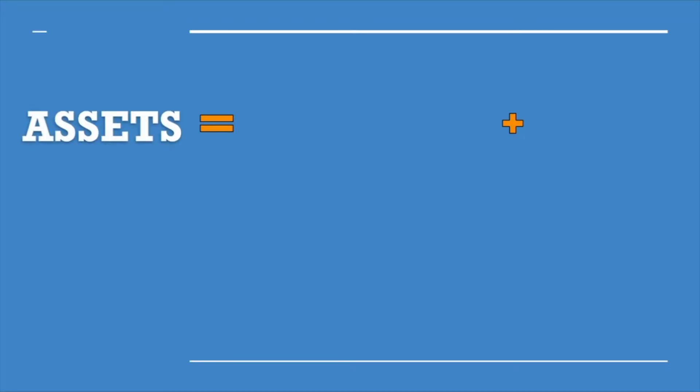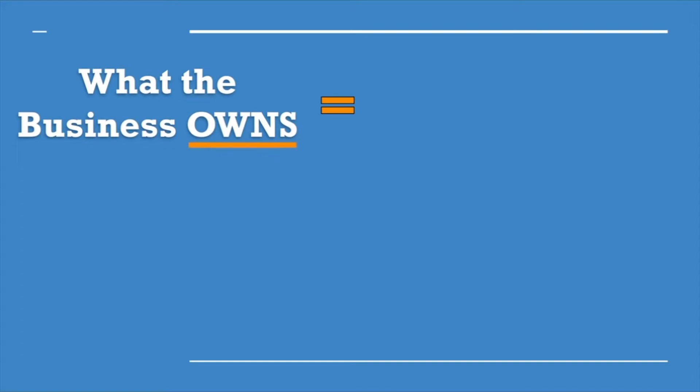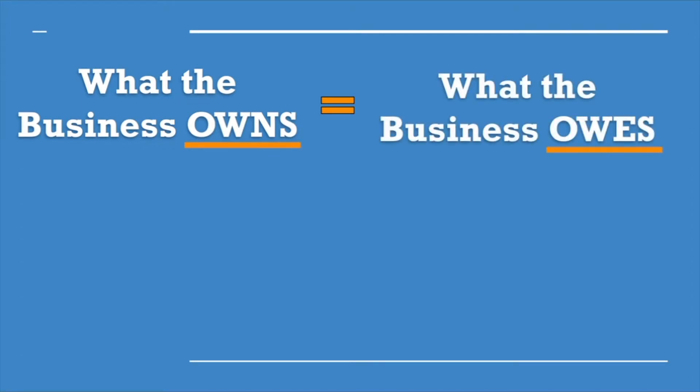Here's the accounting equation: assets equals liabilities plus equity. This might sound like gibberish, so let's simplify it — what the business owns equals what the business owes. Hi, I'm Nathan from Accounting University, and in today's video I will show you exactly how the accounting equation works in five minutes.